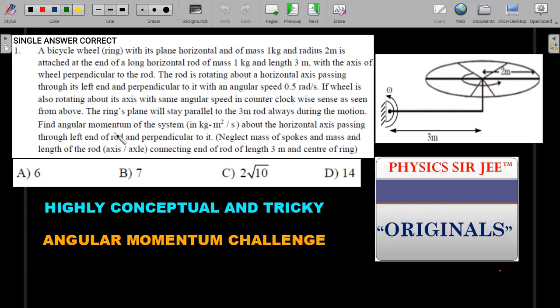If the wheel is also rotating about its axis with the same angular speed in counterclockwise sense as seen from above, the ring's plane will stay parallel to the 3 meter rod always during the motion. Find the angular momentum of the system in kg meter square per second about the horizontal axis passing through the left end of the rod and perpendicular to it. Neglect the mass of the spokes of the wheel and mass and length of the rod axis and axle connecting the end of the rod and center of the ring.